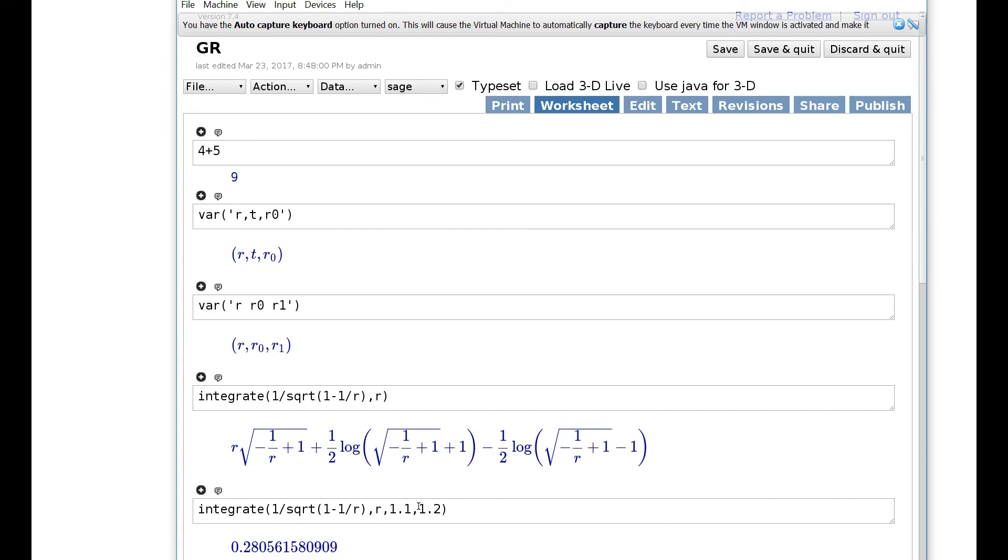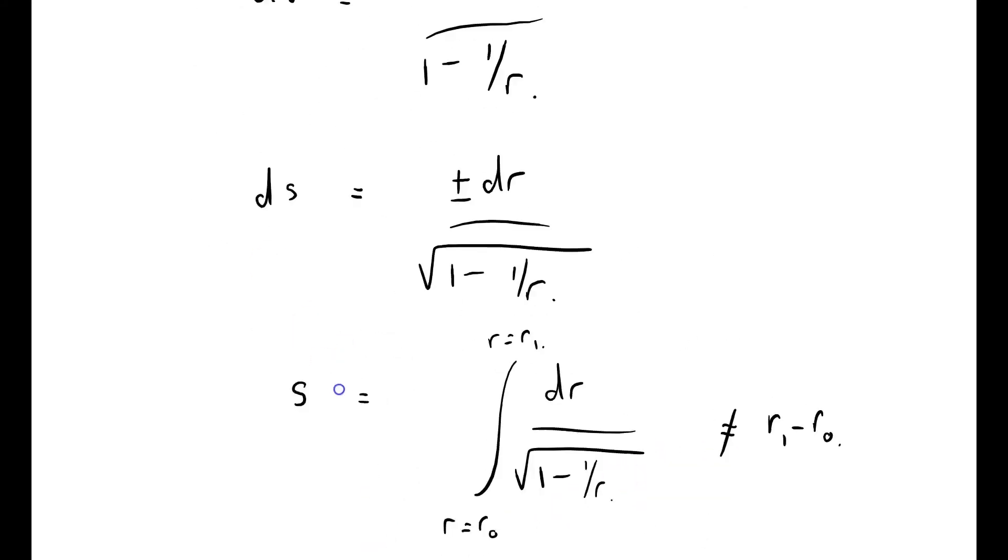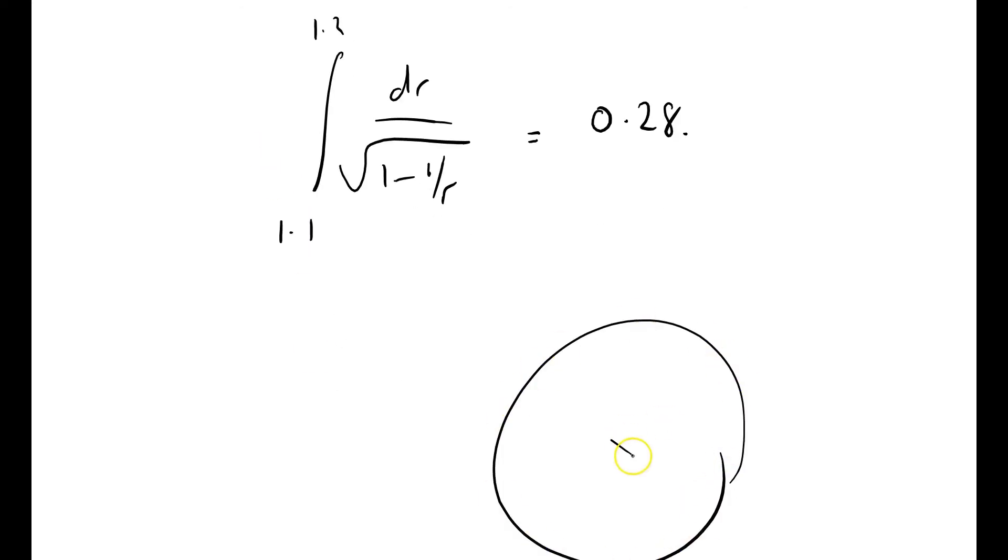Right, so let me just go back to my notepad. So what that tells me is, we've got the integral from 1.1 to 1.2, dr over root 1 minus 1 over r, equals 0.28. So, let me just draw that. We've got a circle of radius 1.1, we've got another circle of radius 1.2, and yet the distance here is 0.28.